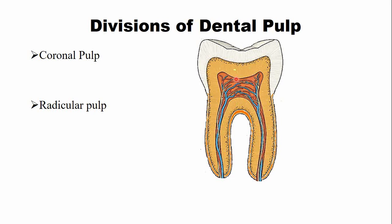The pulp chamber is a space in the coronal part in which the coronal pulp is present, whereas the root canal or the pulp canal is a portion of the tooth in which the radicular pulp is present.